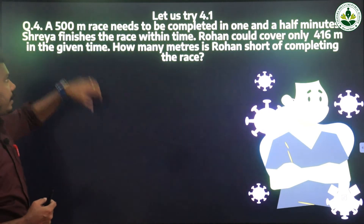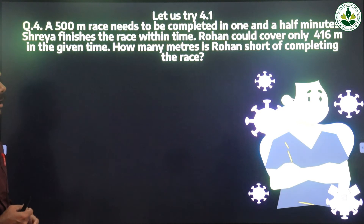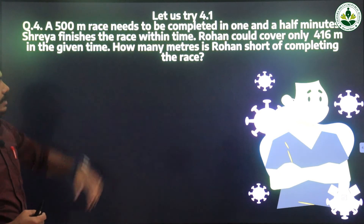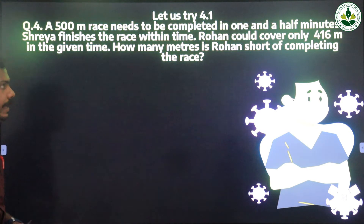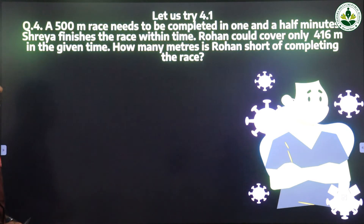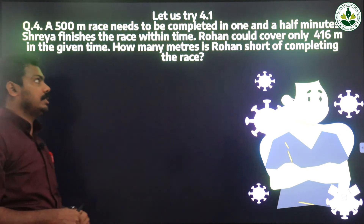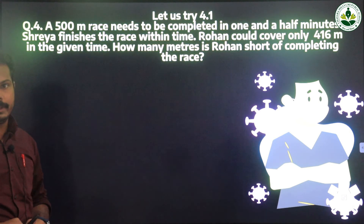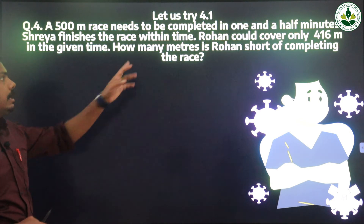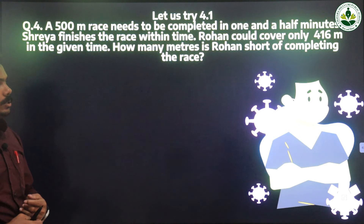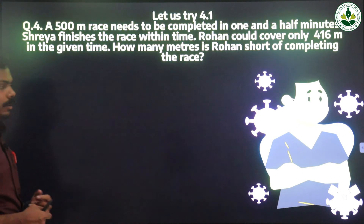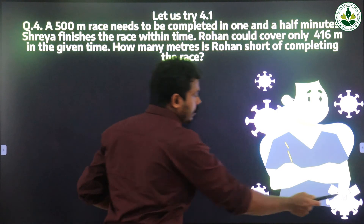A 500 meter race needs to be completed in one and a half minutes. Shriya finishes the race within time. Rohan could cover only 416 meters in the given time. We need to find how many meters Rohan is short of completing the race.